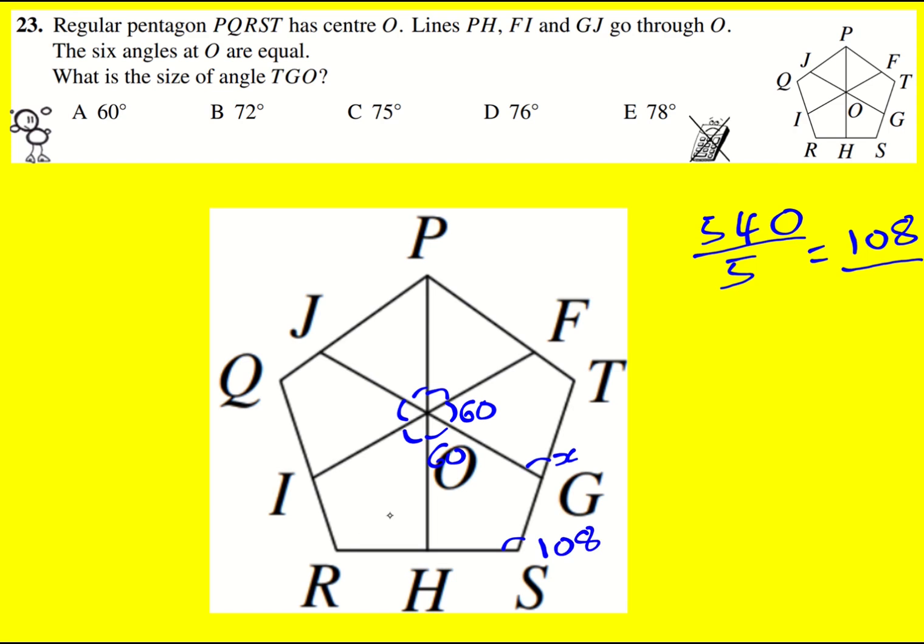And we can label some other ones as well, which is what I actually did when I did this problem. Now, in fact, there's something crucial that took me a while to read. I must have just not read the question fully when I did it. But we are told that the centre is O, and that all the lines go through O, and that actually means something quite important.